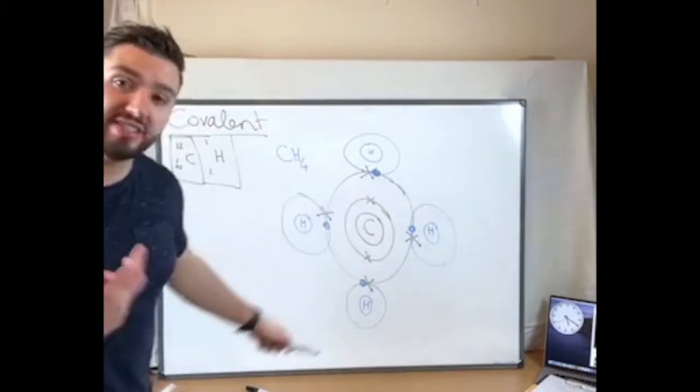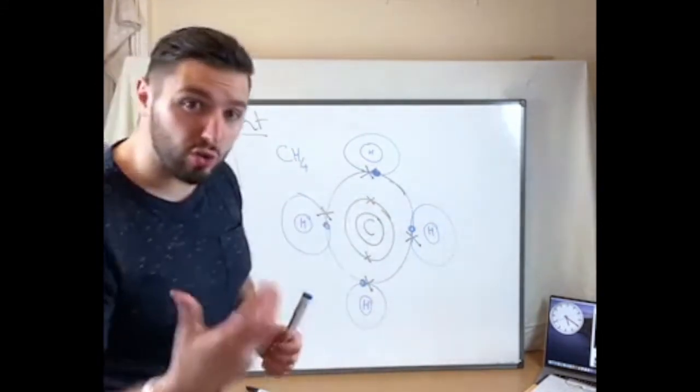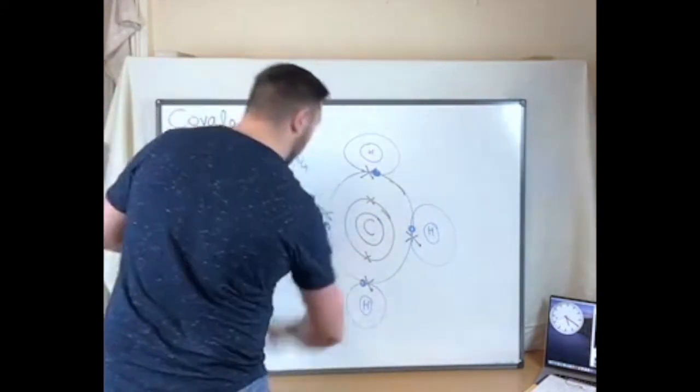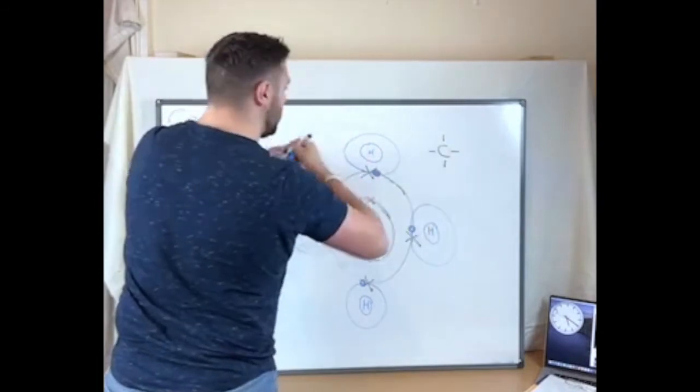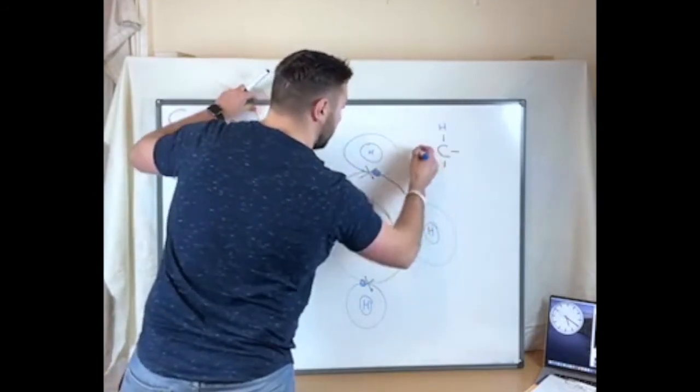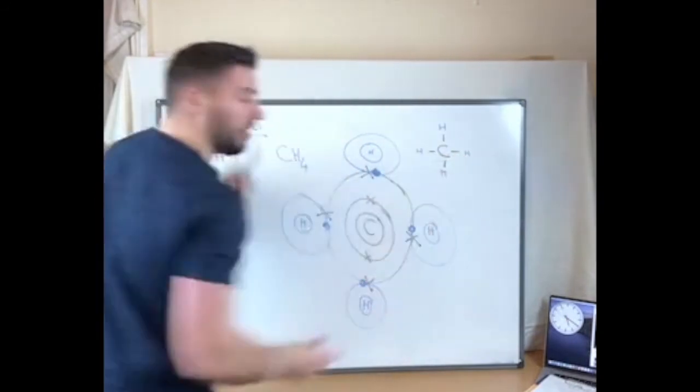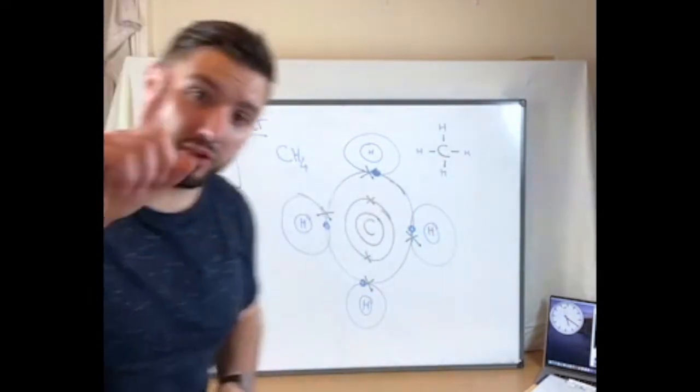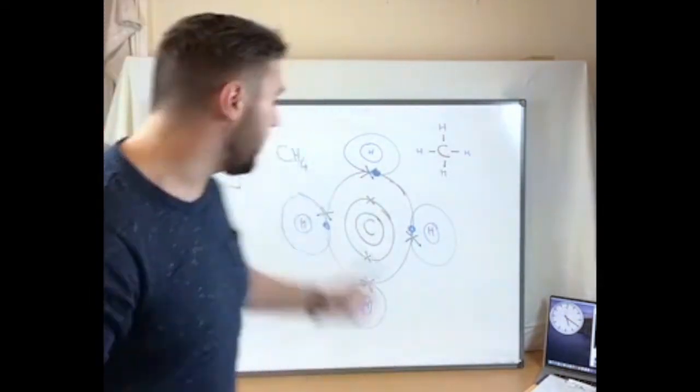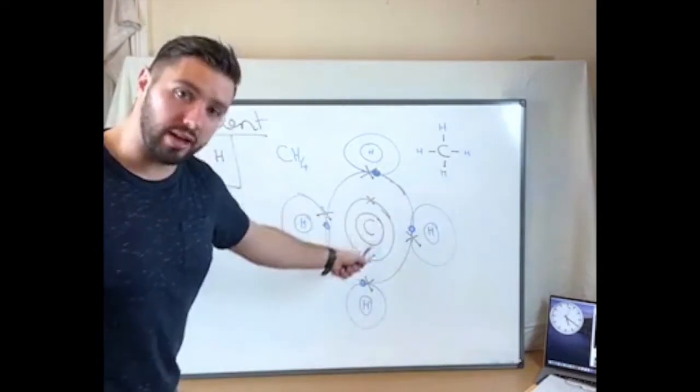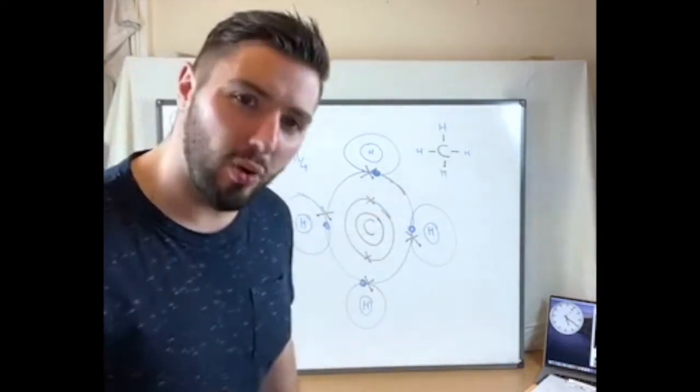Each of those are a single bond. You could also represent it like this where we've got a carbon and a single bond each way to a hydrogen. So this one line, that one line represents a single bond - one single line, one single bond. That's what's happening inside here.